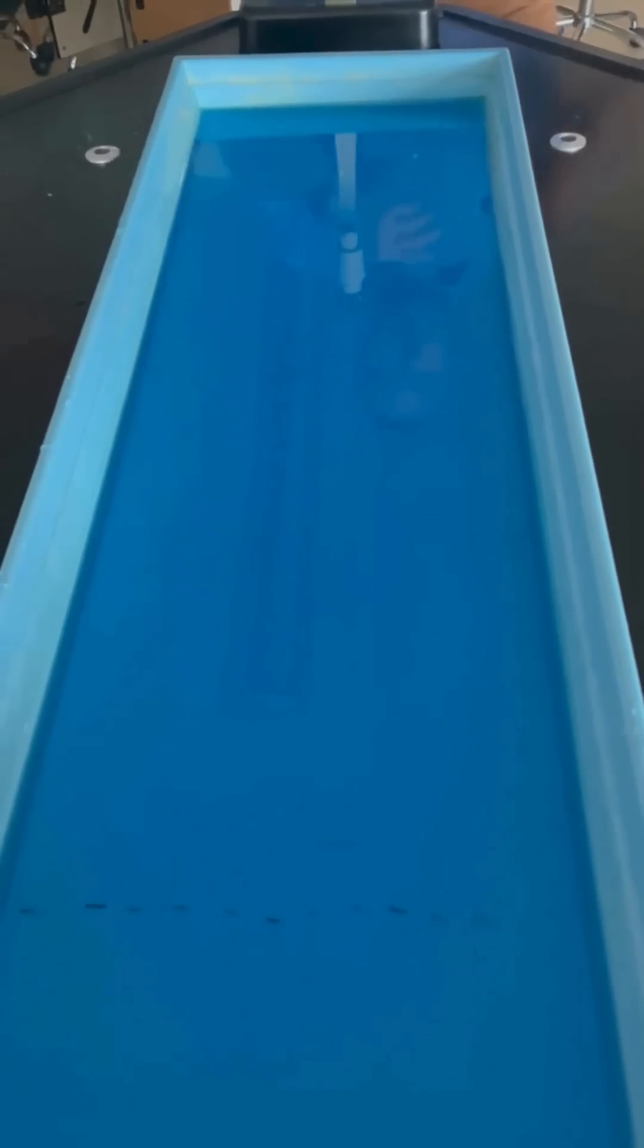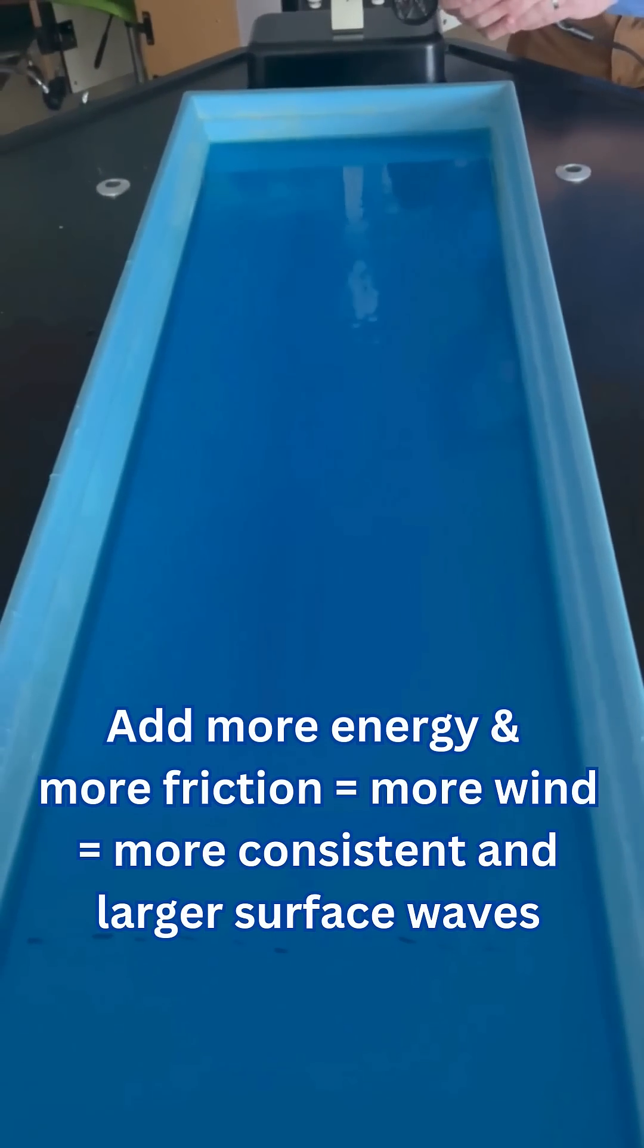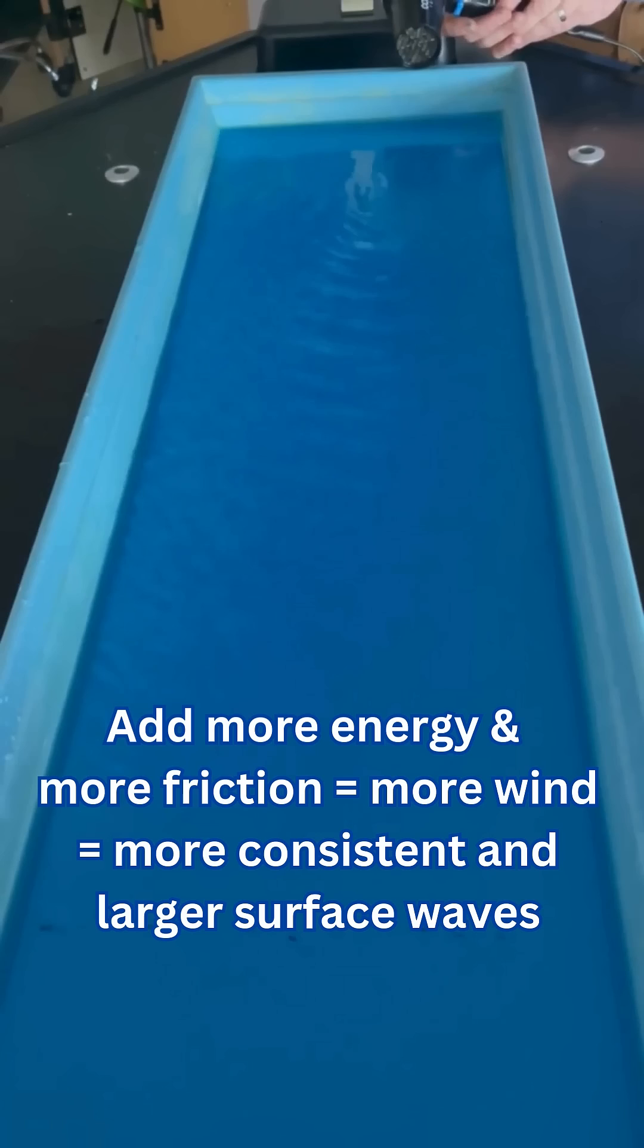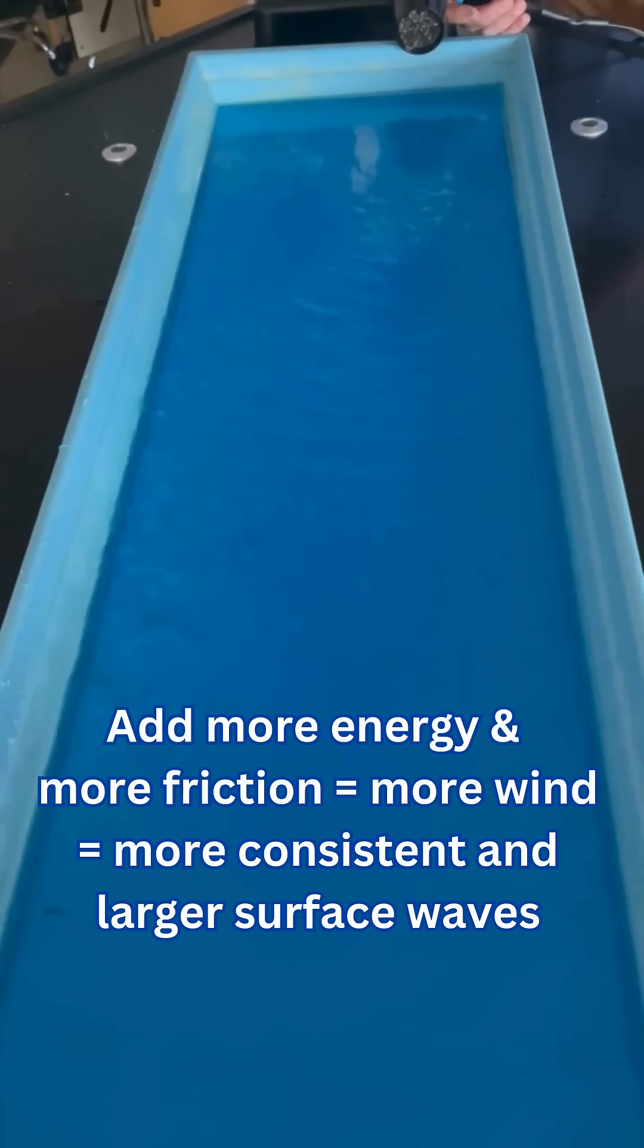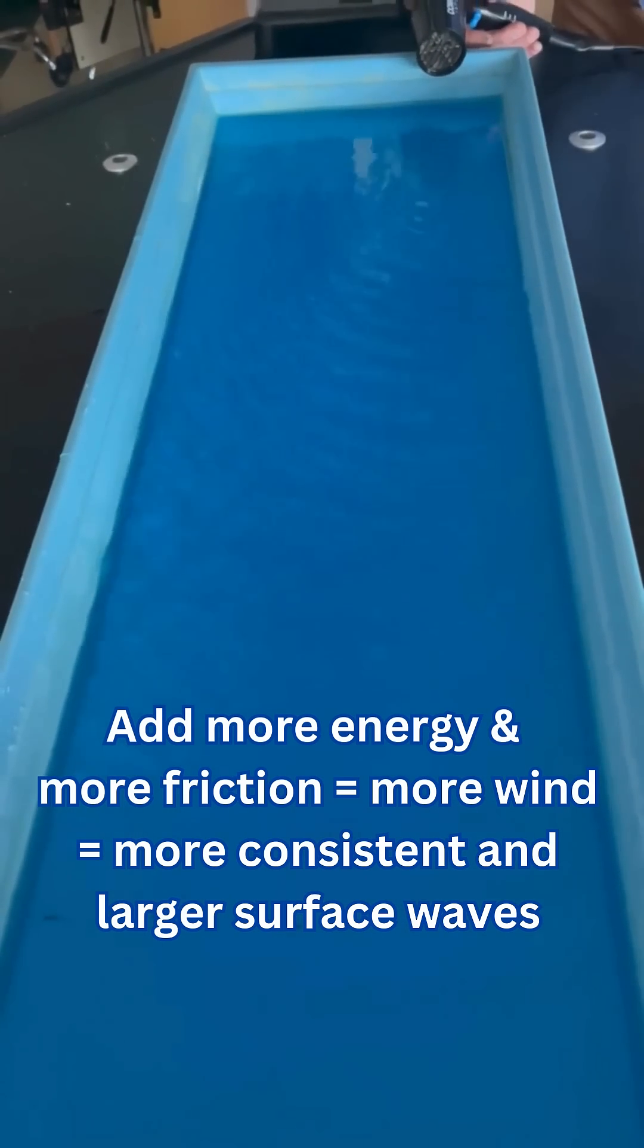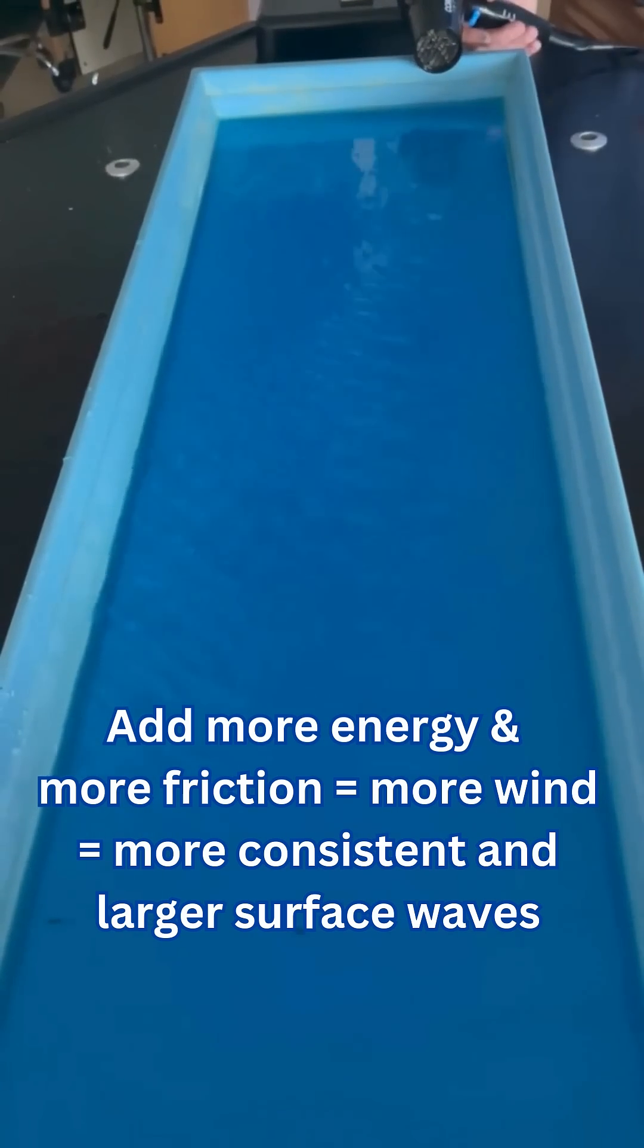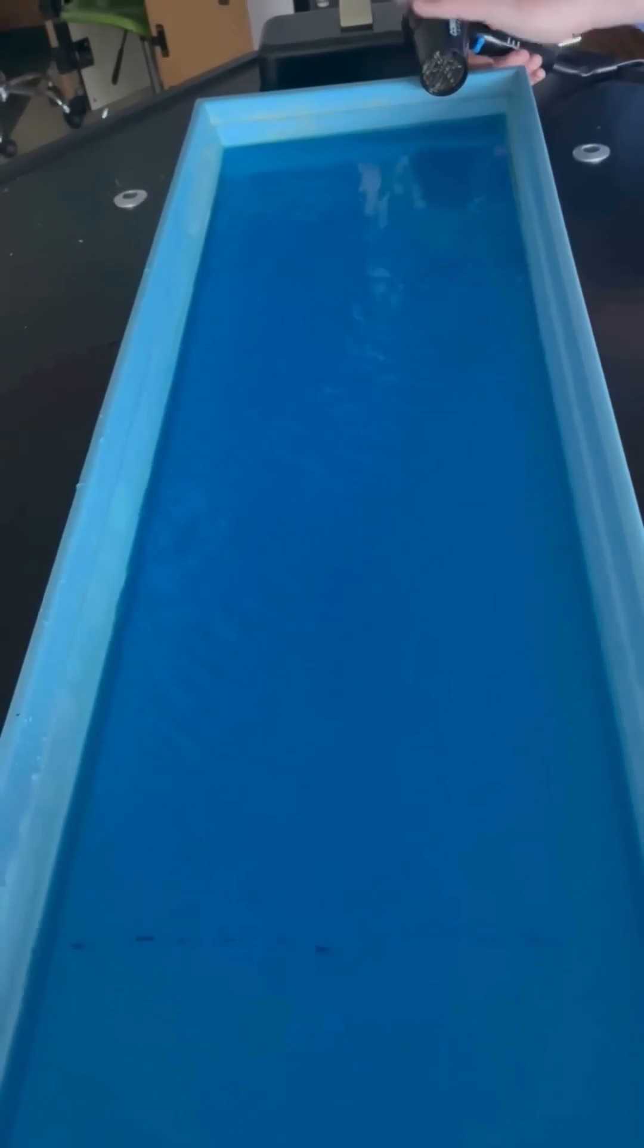Now if I use a hair dryer to simulate more consistent wind at different strengths, you see with the wind acting upon the water, even in this small demonstration, you see the waves begin to form. You see some reflection off the back of the stream table, and you can see the wavelengths, the wave period, and the waves moving and propagating across the ocean surface.